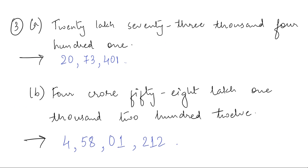Let us now look at question number 3: write the following in figures. The first question is twenty lakh seventy-three thousand four hundred one. We write the number and also put the commas. Since 'lakh' comes from the Indian place value chart, we put commas accordingly and get 20,73,401.